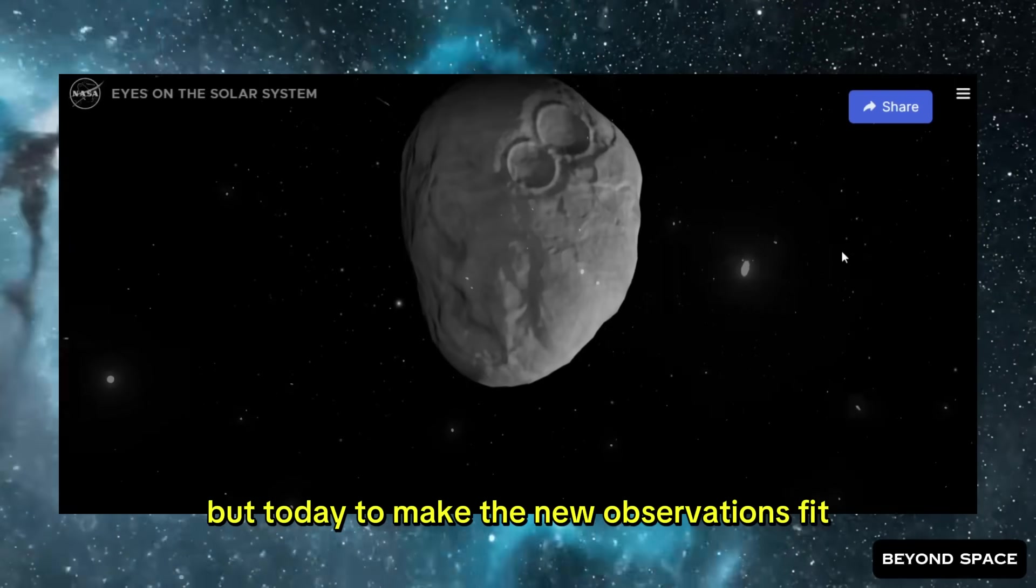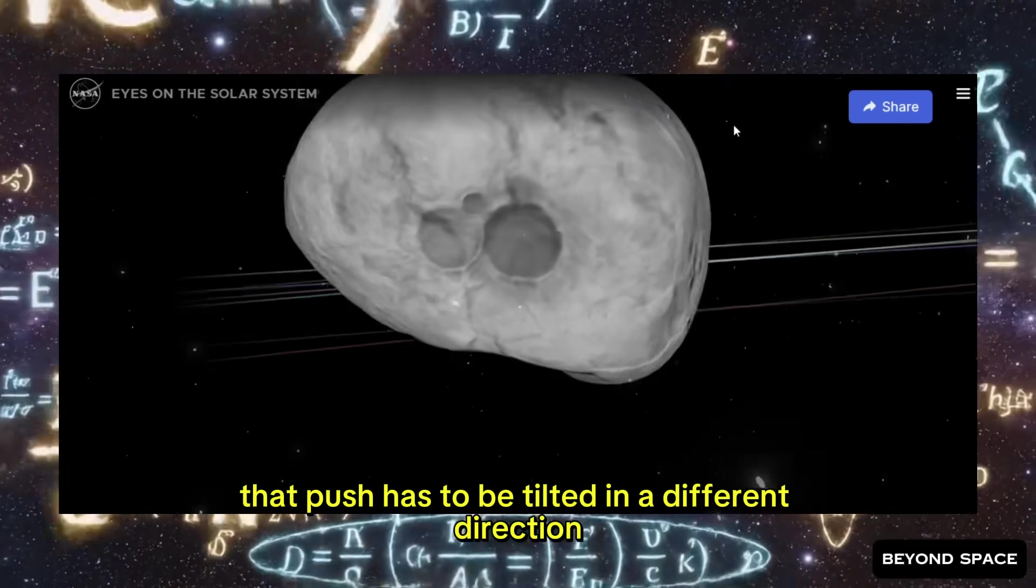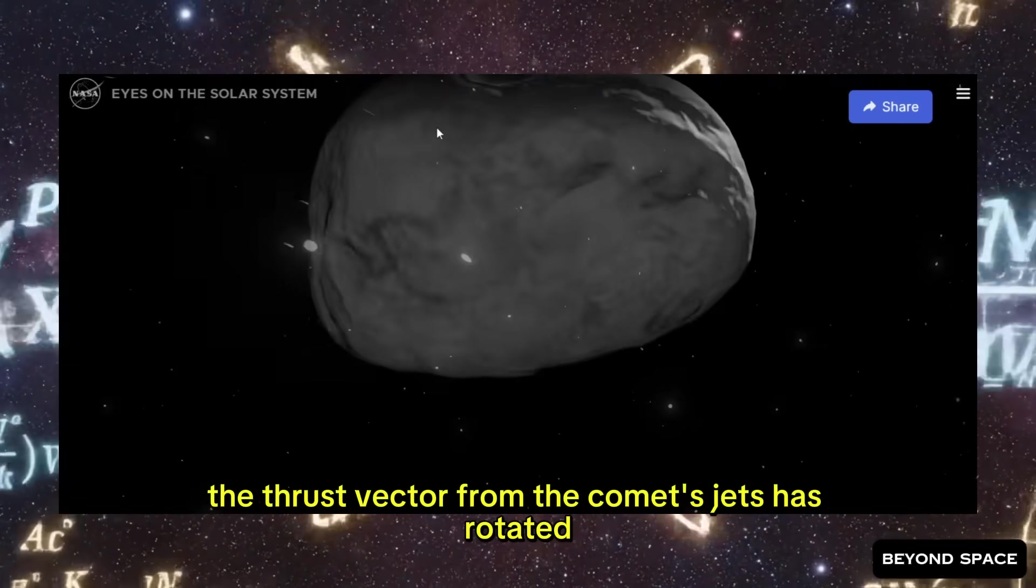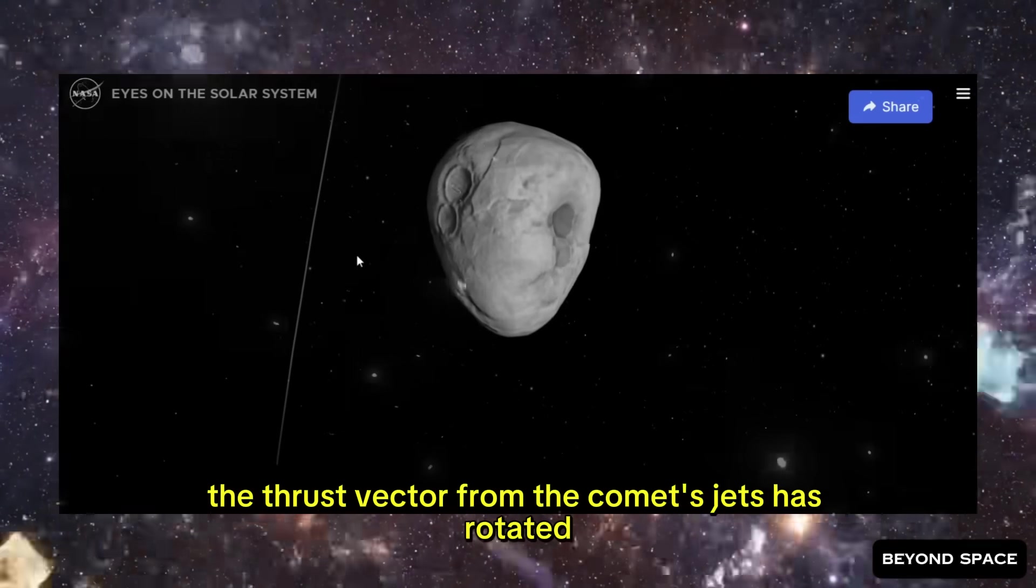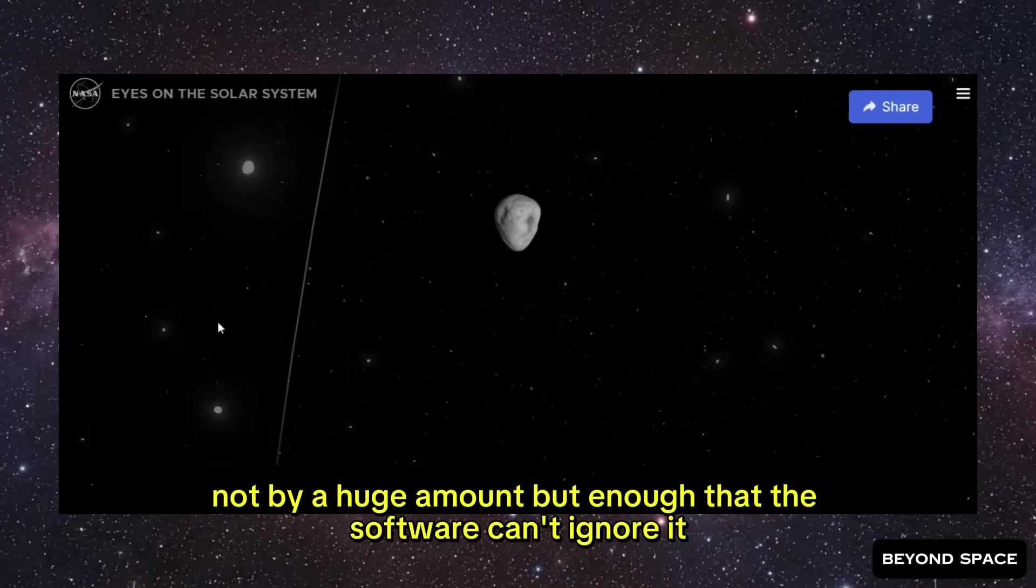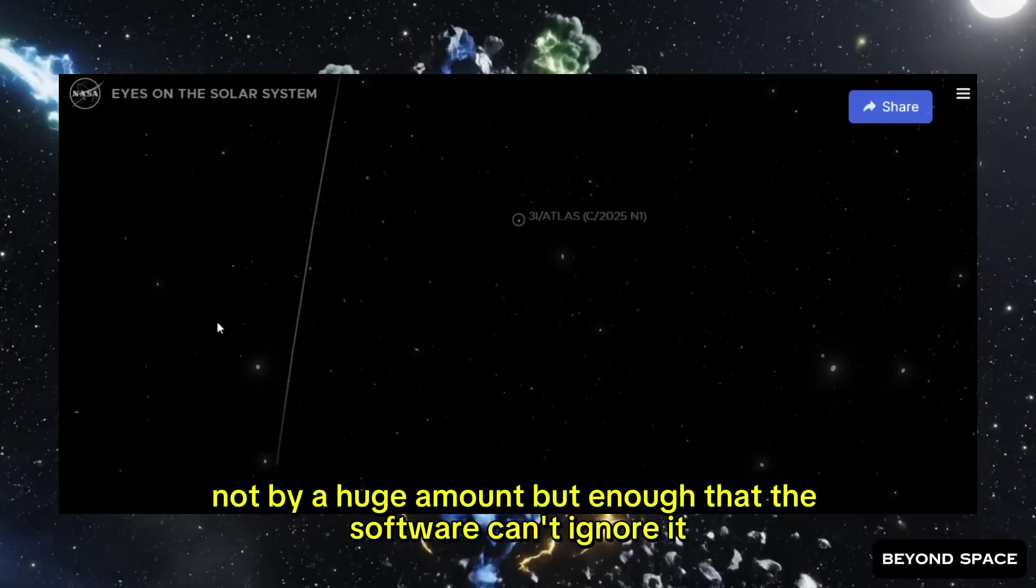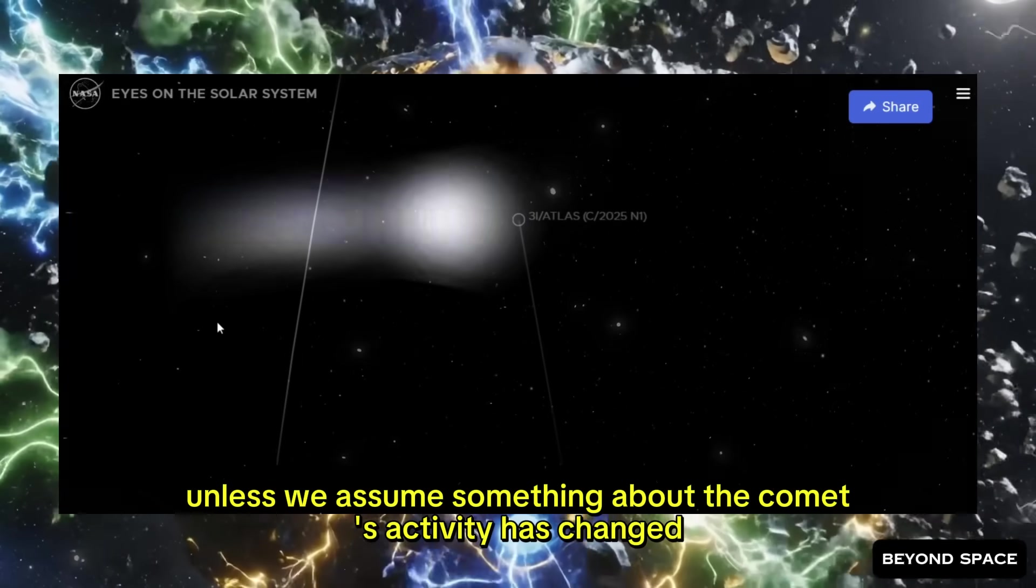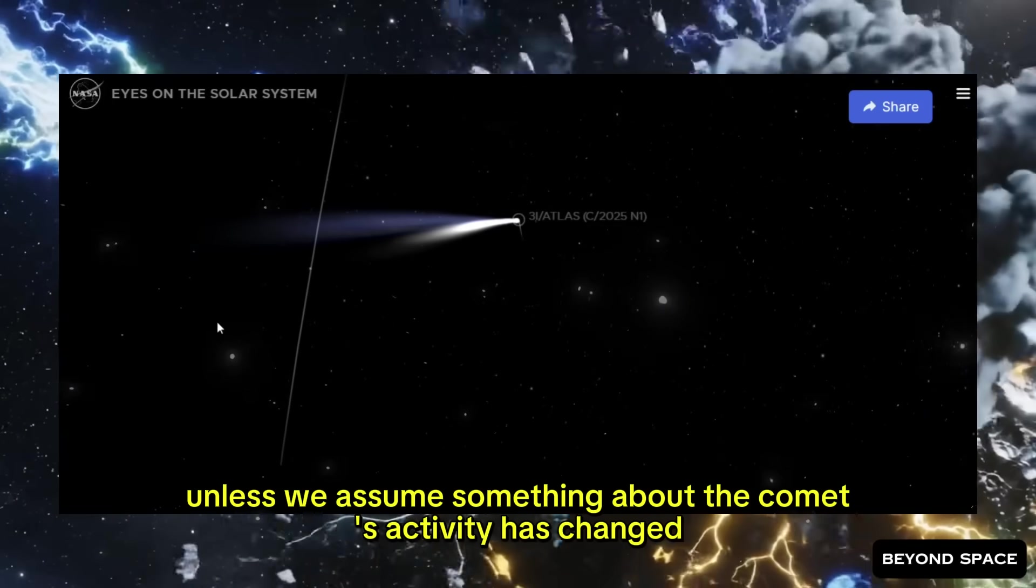And up until yesterday, we had that non-gravitational push pretty well characterized. We knew which direction it was pointing. We knew roughly how strong it was. The orbit calculations accounted for it, and everything matched up reasonably well. But today, to make the new observations fit, that push has to be tilted in a different direction. The thrust vector from the comet's jets has rotated.